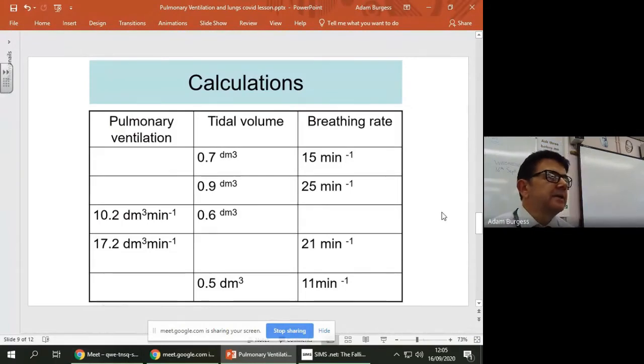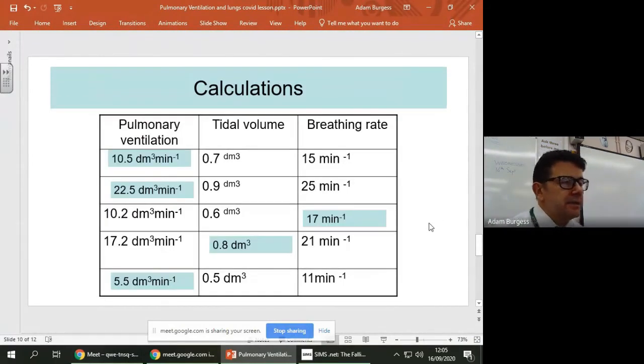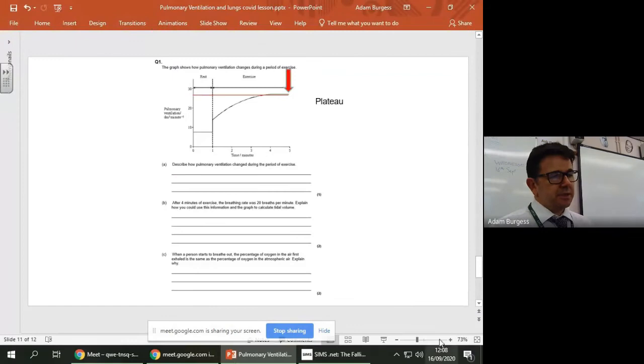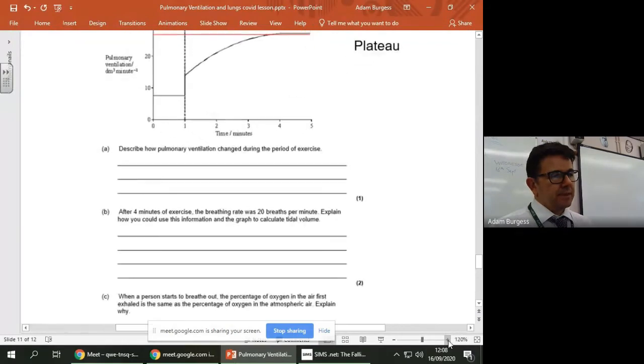So I'll show you the answers. Okay, so here we go, so there are the answers. So in terms of units, remember decimeters cubed is volume per minute. So per minute is always shown as minute, min minus one. Okay, so those are the answers you've got there.